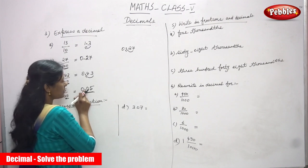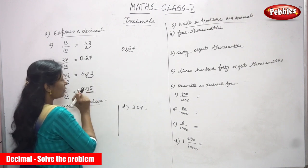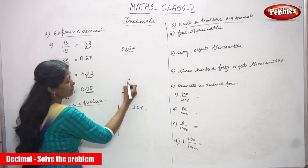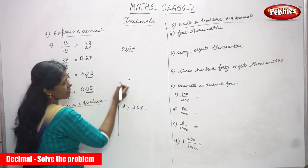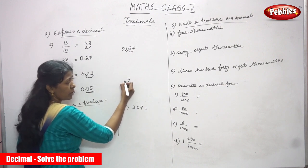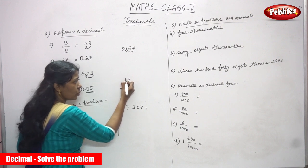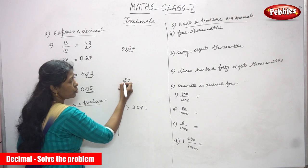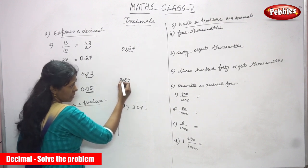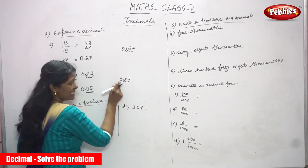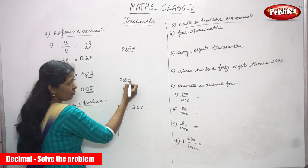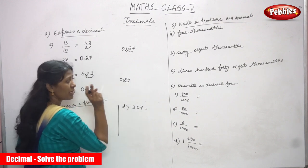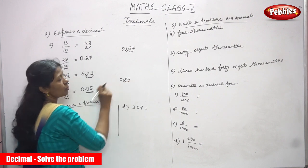The first 0 represents the decimal, and the point is the decimal point. After the point you write 0 and 5. Since there are 2 zeros in the denominator, you move 2 digits from right to left. The numerator has only 1 digit, so you write one more zero. Moving from right to left: 5, then 0, then put the point, then write 0. The answer is 0.05.